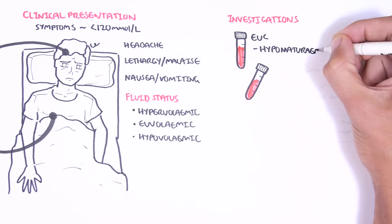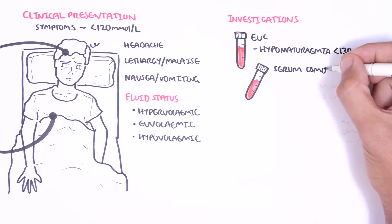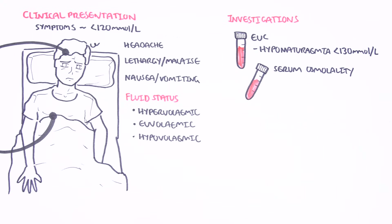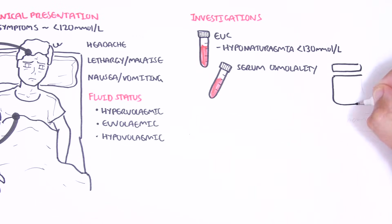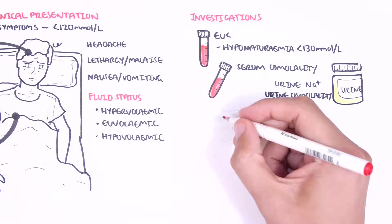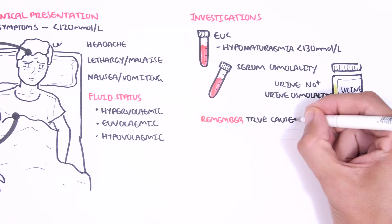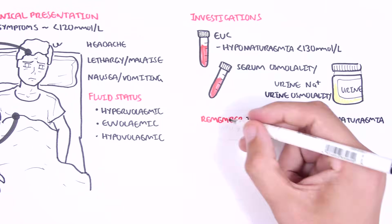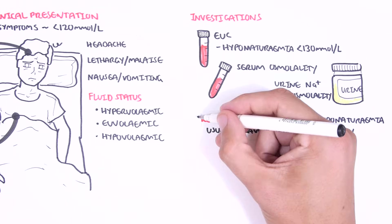Electrolytes, urea, and creatinine help identify hyponatremia, defined as less than 130 millimoles per liter. Other investigations help differentiate between the different causes. These include plasma osmolality — whether it is high, normal, or low. In pseudohyponatremia it is typically high; in true hyponatremia it is typically low. You can also check urine osmolality and urine sodium concentration. True causes of hyponatremia will have low serum osmolality.